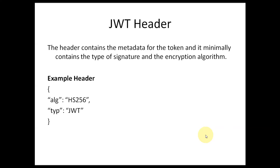The JWT header contains metadata for the token and minimally contains the type and the signing or encryption algorithm used. For example, in this case the algorithm is HS256 and the type is JWT — meaning it is a JWT token and the algorithm used for signing is HS256.